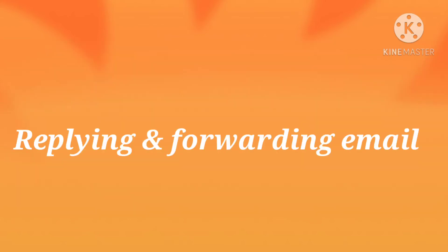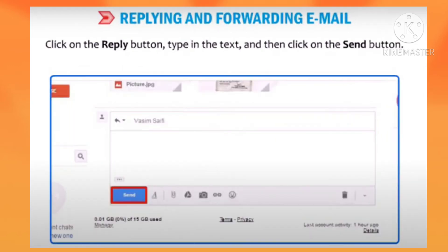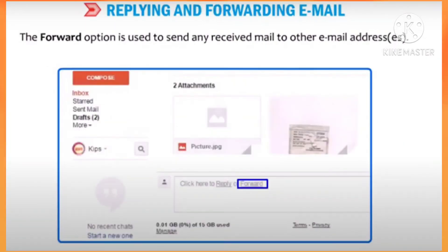Now let us learn about replying and forwarding email. The reply option is displayed when we open any mail. It is used to reply to a received email. Click on the reply button, type in the text, and then click on the send button. The forward option is used to send any received mail to other email addresses.